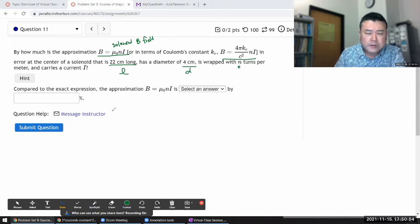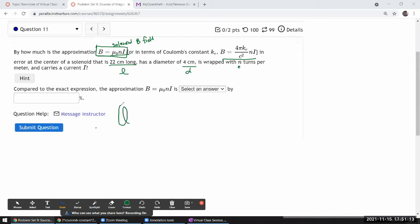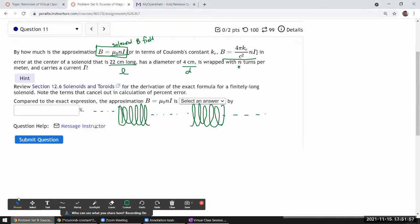When we derive the formula for solenoid field using Ampere's law, we assume we're dealing with an infinitely long solenoid. This assumption is necessary so we can use translational symmetry. However, your textbook actually does the finite version first using Biot-Savart's law, so there's a formula for a finitely long solenoid. Let's look it up and use that.